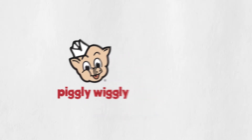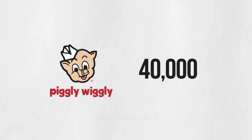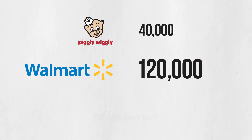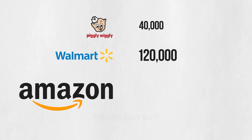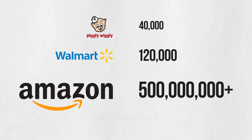Now the average grocery store has around 40,000 products, and the average supercenter has about 120,000 products. These are staggering numbers. Amazon is quickly approaching over half a billion products, and these items find their way to your doorstep in 48 hours, and in some locations can deliver in just minutes. In this new world of democratized distribution, marketplaces, and even currency, how can you disrupt and stand out from the rest?